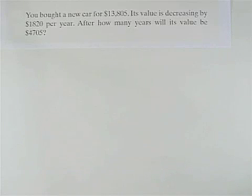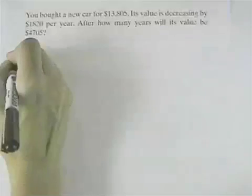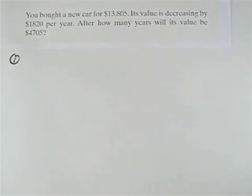We want to use the five-step strategy for solving this word problem. The first step is to read the problem and identify X. It says you bought a new car for $13,805. Its value is decreasing by $1,820 per year. After how many years will its value be $4,705?